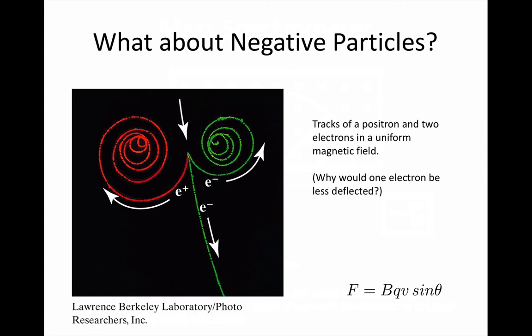We're assuming that the angle theta is the same for all of them, so the only difference could be the speed. So I want you to quickly answer, will the faster electron be deflected more or less than the slower electron?